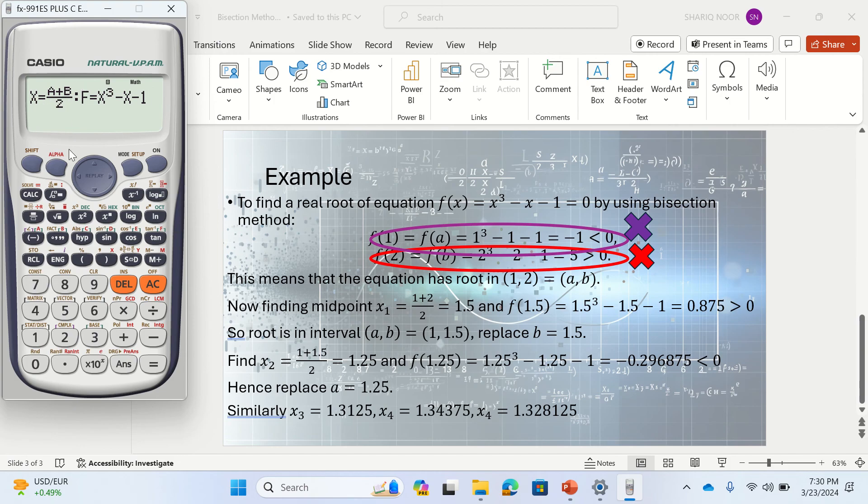So you have to give these two values first. Calculator will be asking about it. Once you have done these things, you simply press this Calc button. This is used for calculation. Now it asks about A. What value do you want to give A? We have given it 1, so I'll press 1 and then equal.